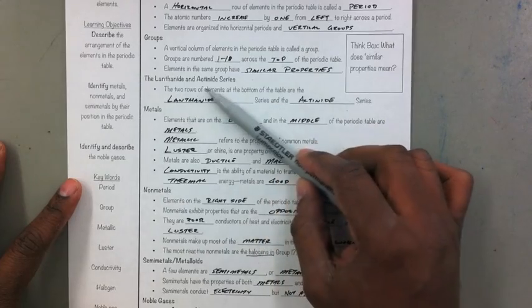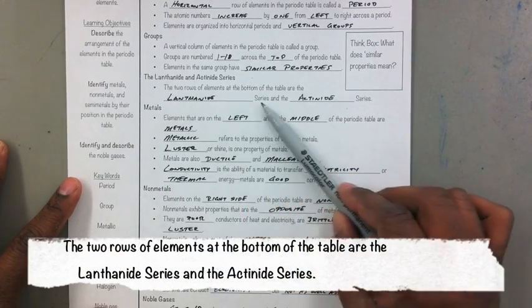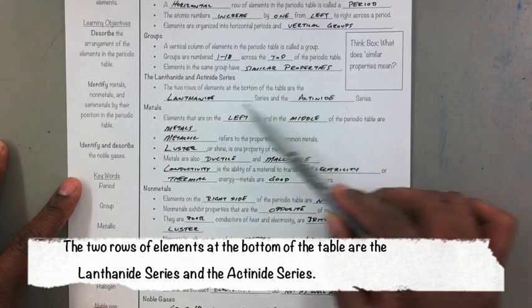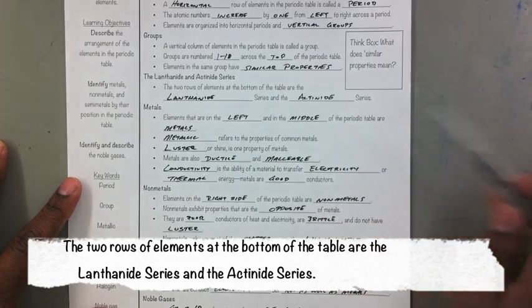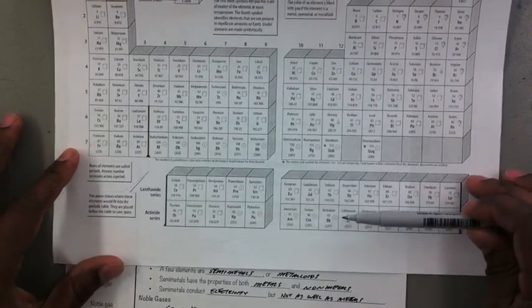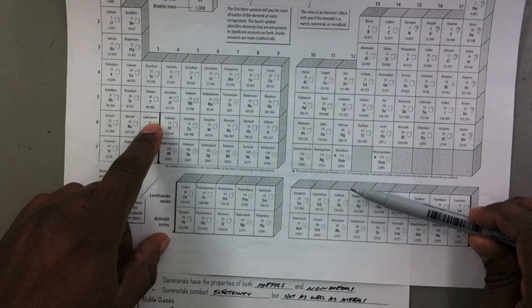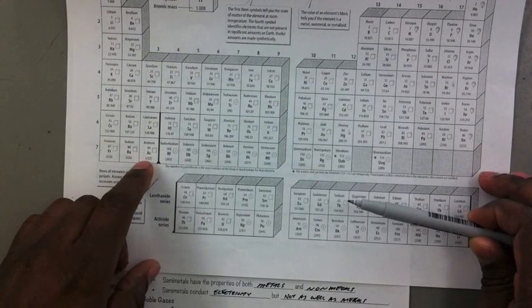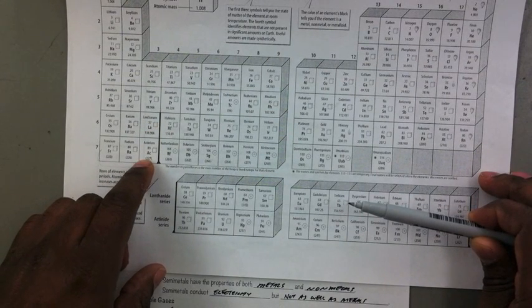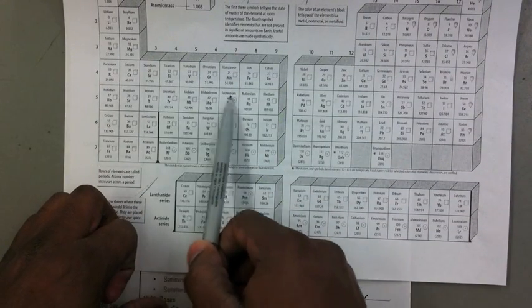The lanthanide and actinide series. There are two rows at the bottom of the table, and they are the lanthanide and actinide series. You may have noticed them. You'll notice that element number 57 is lanthanum. Element number 89 is actinium. And as you've just learned, elements increase by one as you go from left to right.